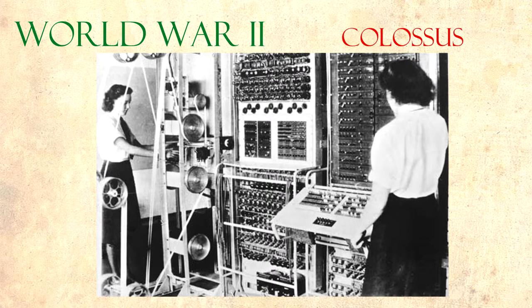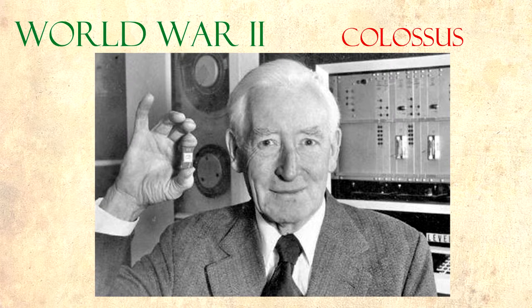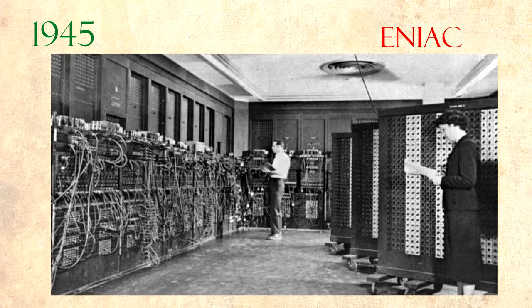The other machine was Colossus, the world's first electronic digital programmable computer. This machine was created to crack an even more sophisticated code than Enigma. Tommy Flowers designed and built the code-breaking machine, taking him 11 months to create. The United States built ENIAC, a device similar to Colossus, but that could work out problems a thousand times faster than any machine. It was created in 1945.